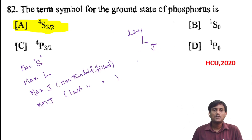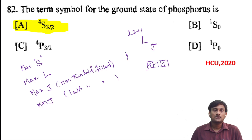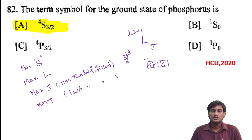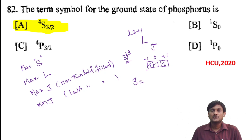Let us check phosphorus. The outermost electronic configuration has 3 electrons in a half-filled arrangement. The ml values are minus 1, 0, and plus 1. The total spin S equals plus 1/2 plus 1/2 plus 1/2, which is 3/2. The total L value equals minus 1 plus 0 plus 1, which is 0.